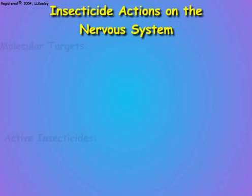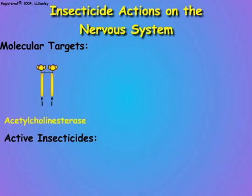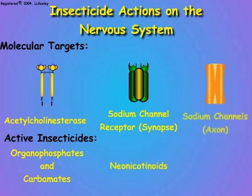Insecticides destroy the central nervous system by affecting critical molecular targets essential to nerve functions. We previously discussed inhibition of acetylcholinesterase by organophosphate and carbamate insecticides, and the hyperstimulation of the synaptic sodium channel acetylcholine receptors by neonicotinoids. We will now discuss hyperstimulation of the axon sodium channels by synthetic pyrethroids.